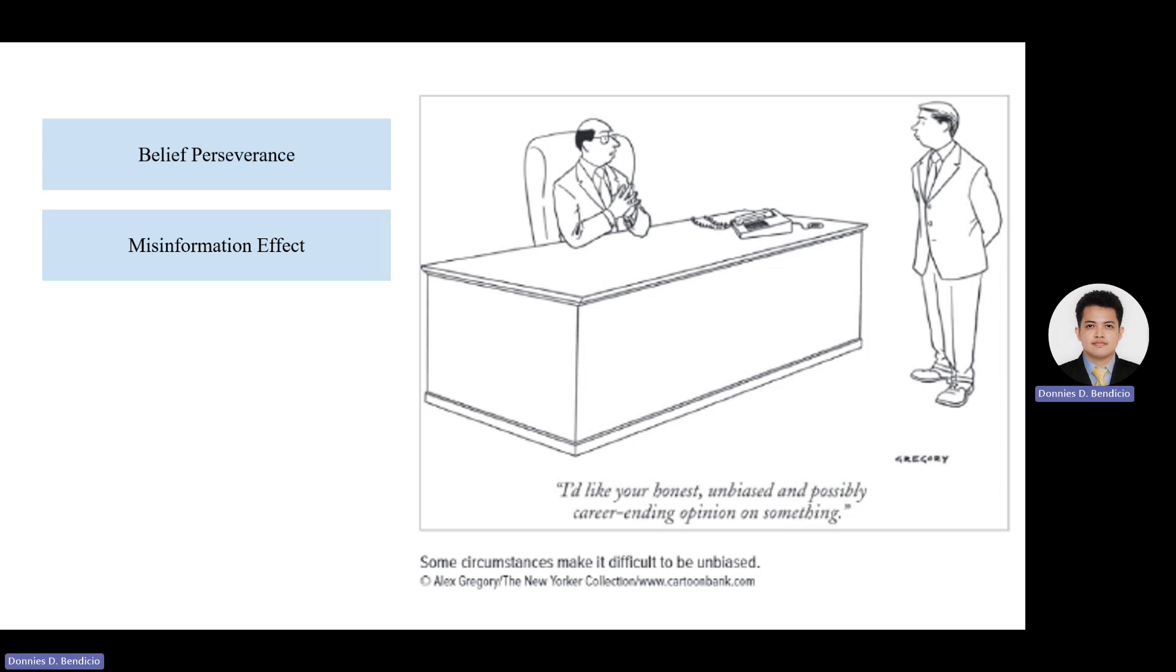Belief perseverance is the tendency to cling to one's initial beliefs or opinions even when confronted with contradictory evidence. This cognitive bias can significantly impact how we perceive our social worlds. For example, consider a study where participants are given information about controversial social issues such as climate change. If individuals already hold strong beliefs on the topic, they may dismiss or downplay new scientific evidence that contradicts their pre-existing views.